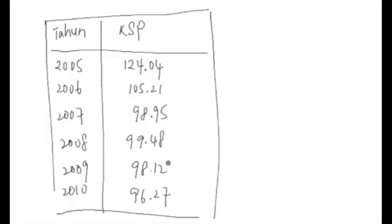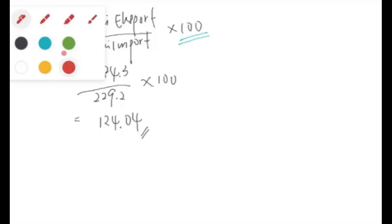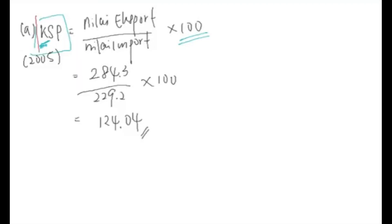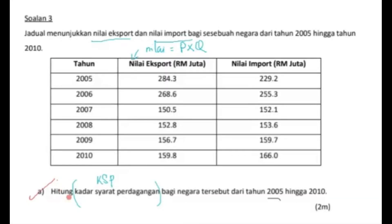Itu adalah jawapan untuk KSP daripada tahun 2005 hingga tahun 2010. Sekali lagi saya tekankan, sila ingat rumus KSP di mana kita pakai nilai ekspor bahagi nilai import darab dengan 100. Selesai untuk soalan A ini sebab dia minta kita hitung sahaja.